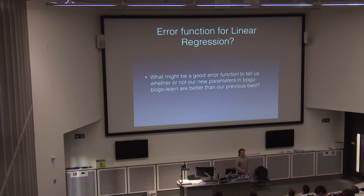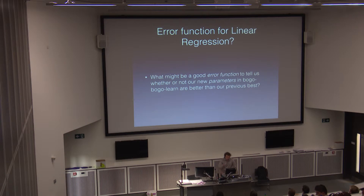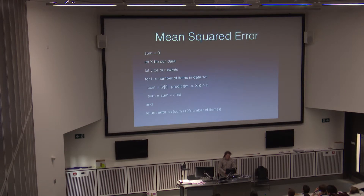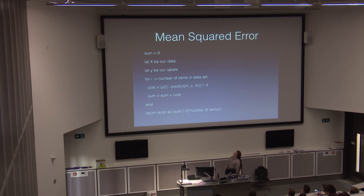So what could be a good error function for a model like this? We have the data but we make a prediction — we do mx + c for some m and c — and then we have the actual output of what it should be. The difference is a good one. Usually we use the squared difference — mean squared error. For all of them, sum the difference between prediction and the true one, and then divide by two and the number of items that we have. That's not entirely necessary, but it helps.